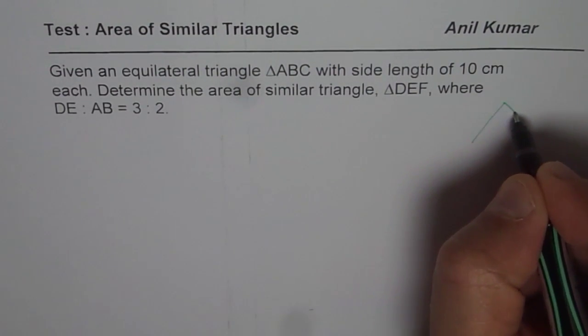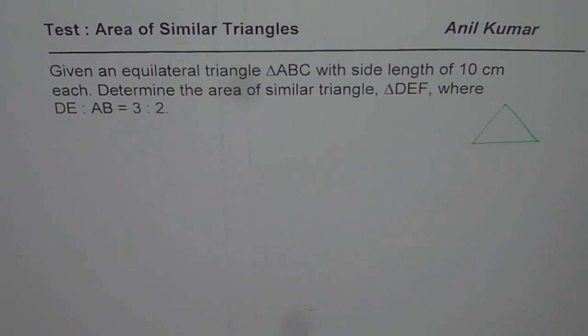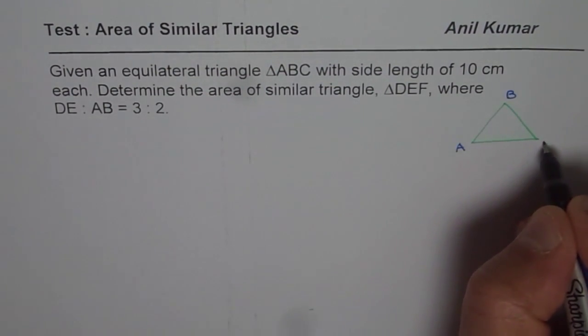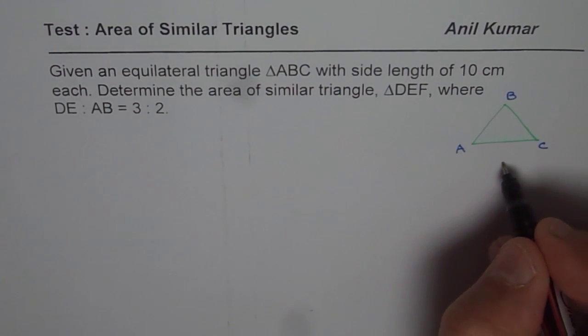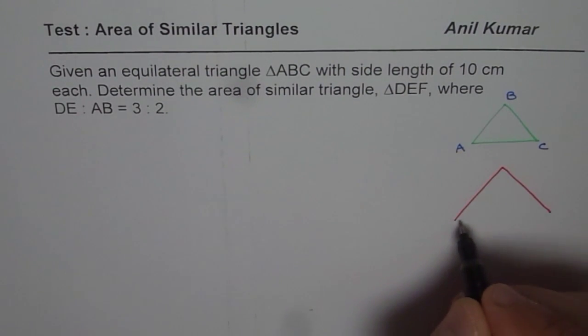So let's begin with equilateral triangle ABC. We are given two triangles. Let's say this is the equilateral triangle ABC. And then we have another triangle which has a side ratio of 3 to 2, so the bigger triangle. Let me make a bigger triangle here, and that triangle is also equilateral.